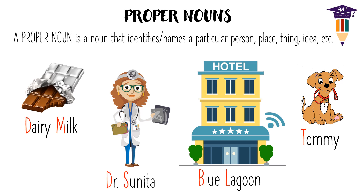Also, please note that all proper nouns begin with a capital letter. That is, the D and M of Dairy Milk, the D and S of Dr. Sunita, the B and L of Blue Lagoon, and the T of Tommy all begin with capital letters.